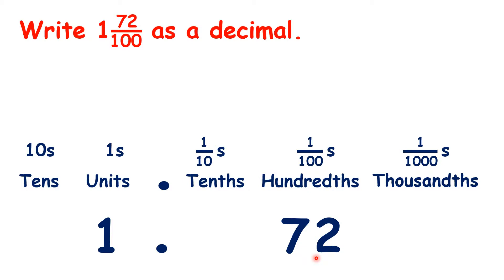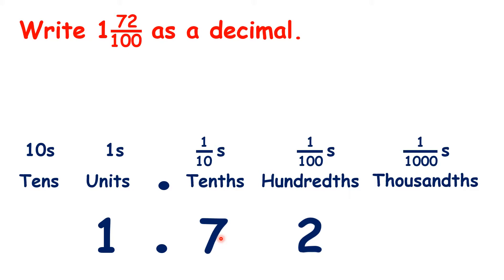We have a problem here because we can only have one digit in each place value column. Because our mixed number has a denominator of 100, we can't go past the hundredths column, which means that the digits have to move to the left. So that's 7 in the tenths place and 2 in the hundredths place, to make our decimal number 1.72.